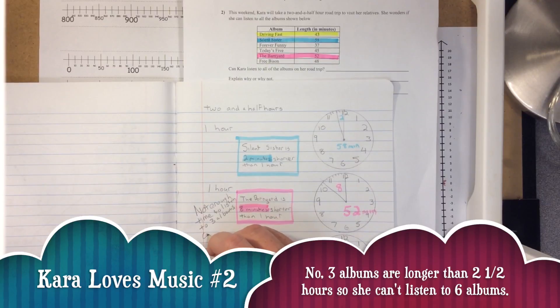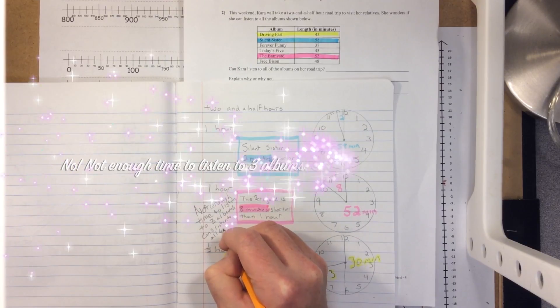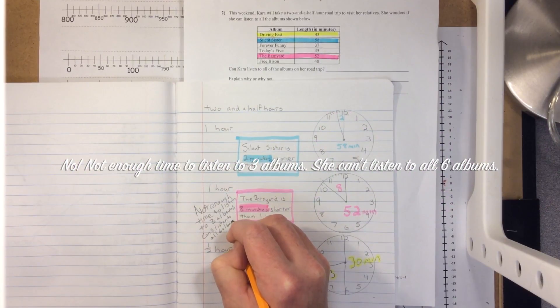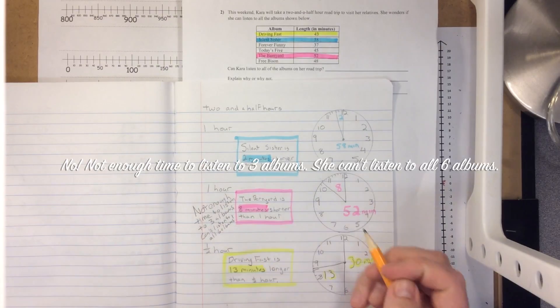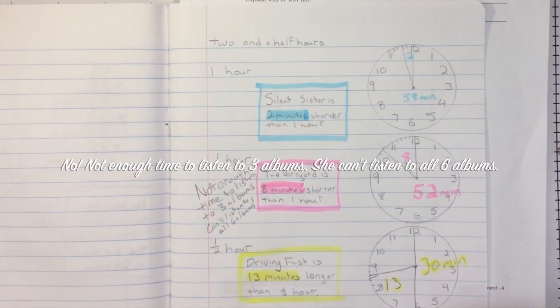So the strategy we use is to pick some albums that were near the times that we're thinking about, and then compare these numbers more easily. And that way we know that she cannot listen to all six in two and a half hours because she couldn't even finish these three.